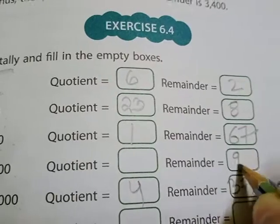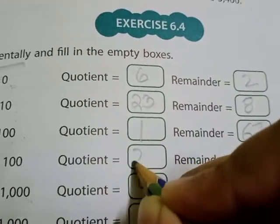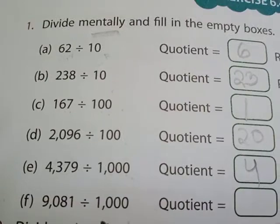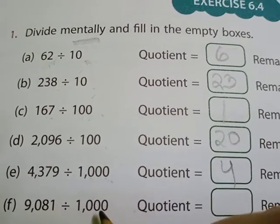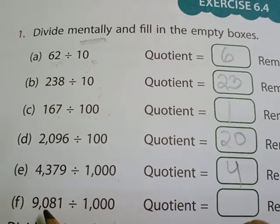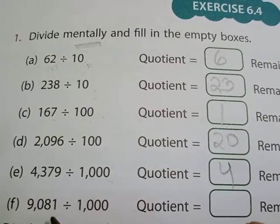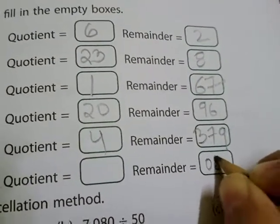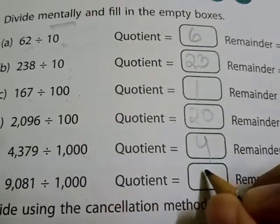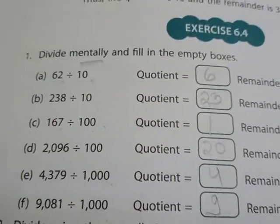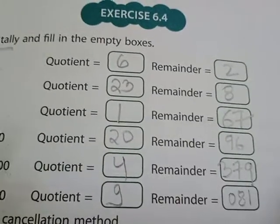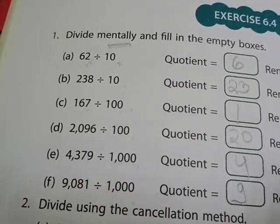Two zeros here, so two digits go to the remainder. Then we have three zeros — three digits means from the back side, three digits will go into the remainder: 0, 3, 0. Then 8 goes into the remainder, and 1 and 9 will be written in the quotient. Got it? No need to use copy and pen — simply divide in your mind.